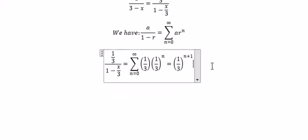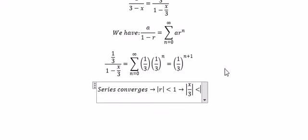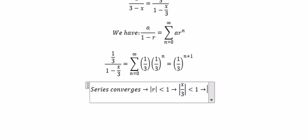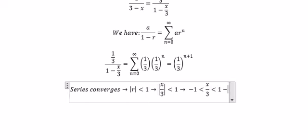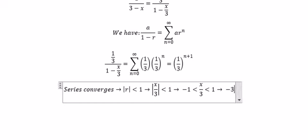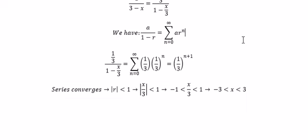Next we need to find about series convergence. So we have x over 3, that is about r inside the absolute value smaller than number 1. So we put about x over 3 smaller than number 1. We get about negative number 1 smaller than x over 3 smaller than number 1, and we get about negative number 3 smaller than x and x smaller than number 3.